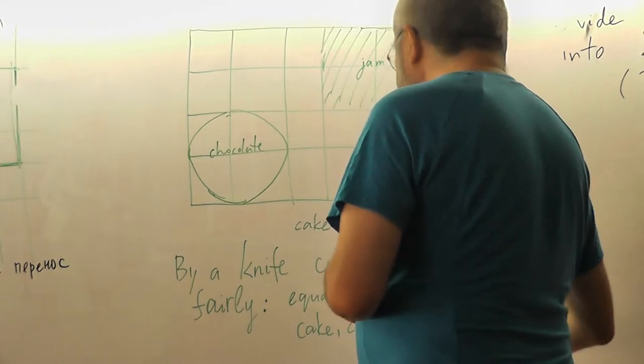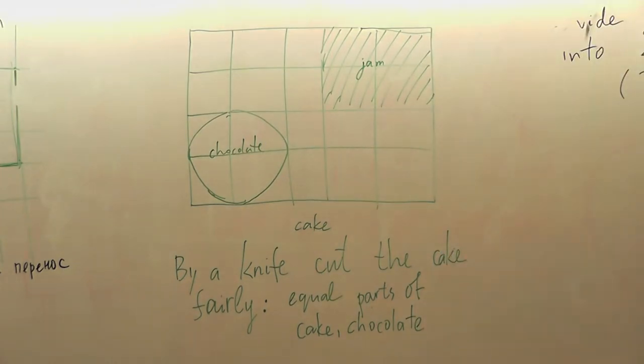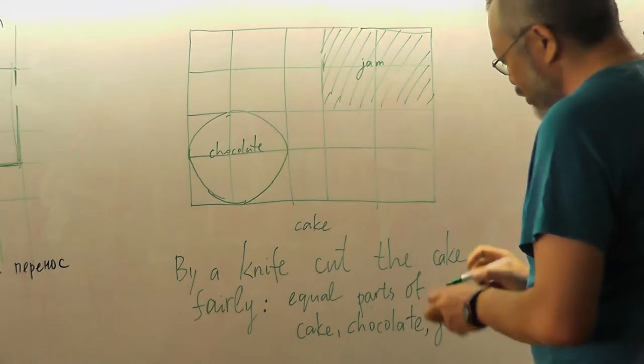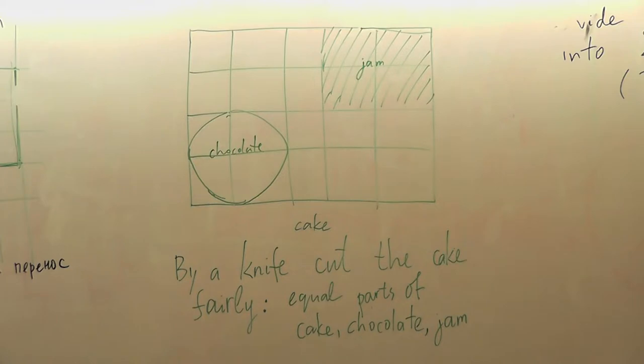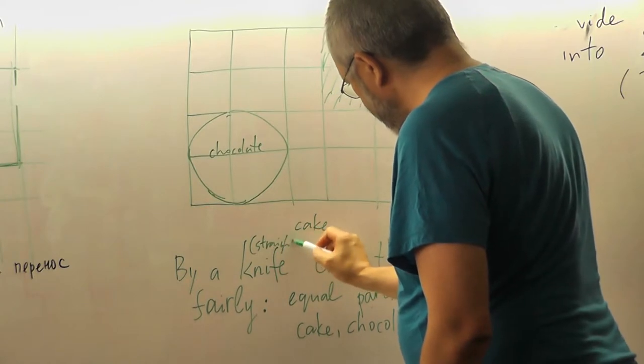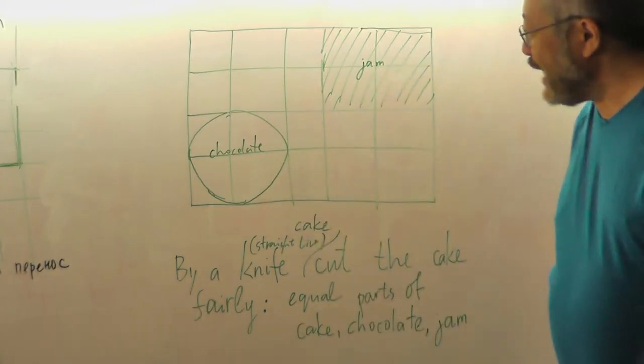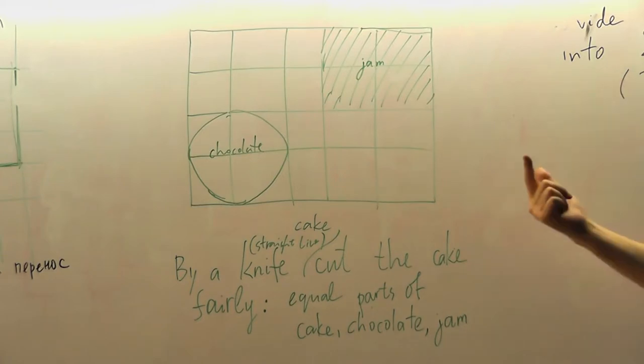So you need to divide it into two people, you and your friend. And you want to be completely fair. Each of you should get the same amount of all three quantities. So you need to divide it into two parts, exactly, all around the selection we have here.